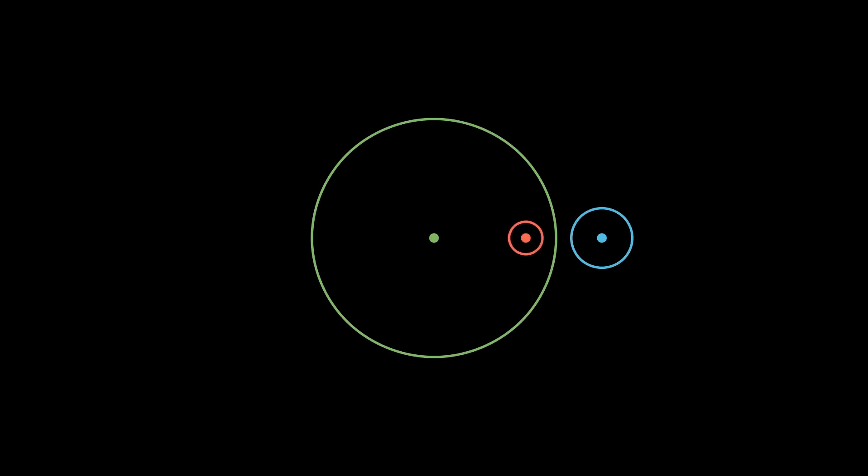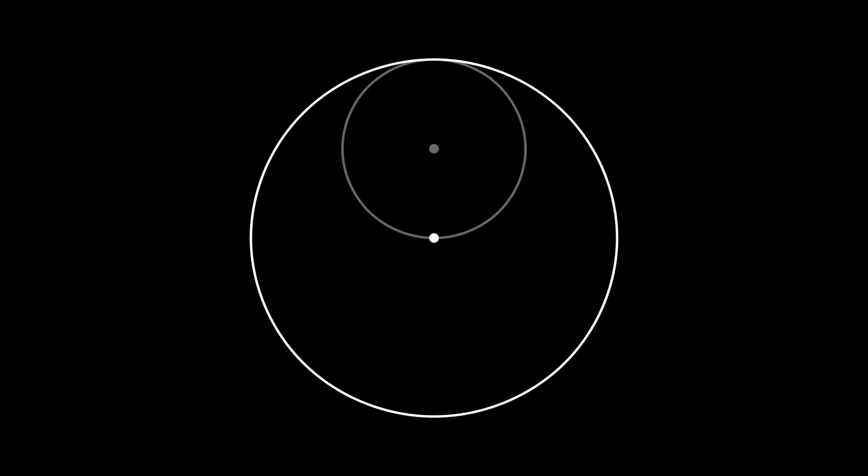Now, let's look at a typical problem we can solve using this technique. Here we have a unit circle with several other circles inside of it. Our job is to find the radius r of the smaller circle. Have a think about how you would do this and pause the video and try it out.